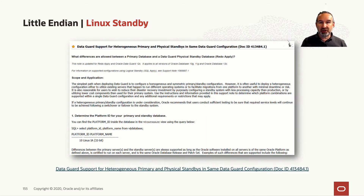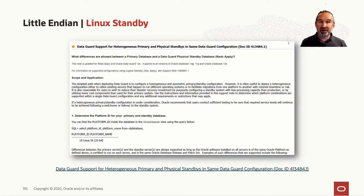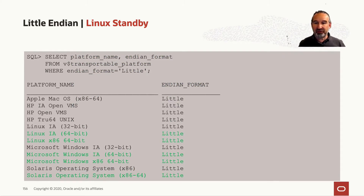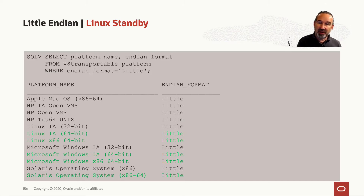The combinations which are allowed are described in this MyOracle Support MOS note. The DataGuard support for heterogeneous primary and physical standby in the same DataGuard configuration node tells you which platforms are allowed to play together. In V$DBA_TRANSPORTABLE_PLATFORM in the database, you find all these platform names, and marked in green are the ones where your on-prem source database can be, to allow you to have a physical standby set up in the OCI cloud.